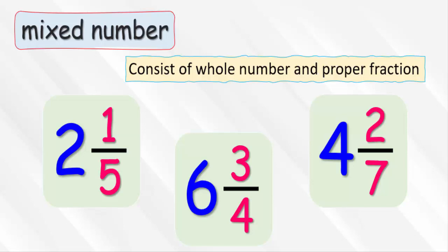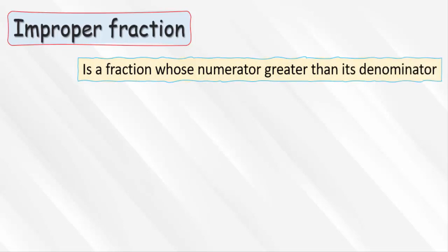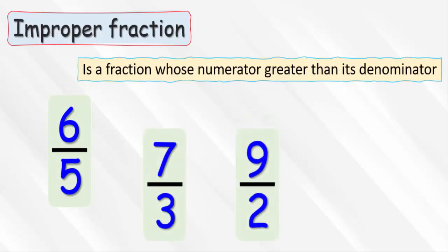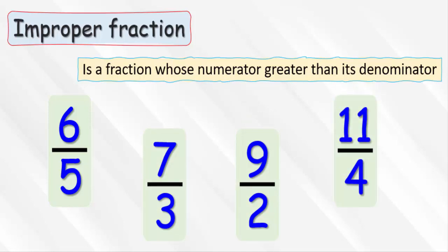These are mixed numbers because they consist of a whole number and a fraction. But the improper fraction is a fraction whose numerator is greater than its denominator, like 6 over 5, 7 over 3, 9 over 2, or 11 over 4. We call each of these forms an improper fraction. Now let's see how to convert an improper fraction to a mixed number through different examples.